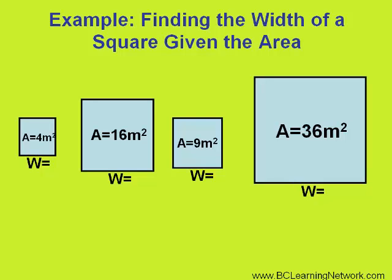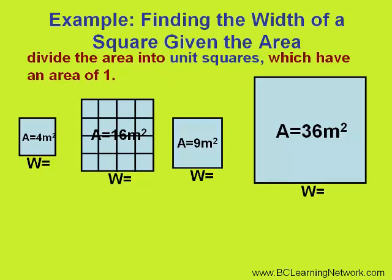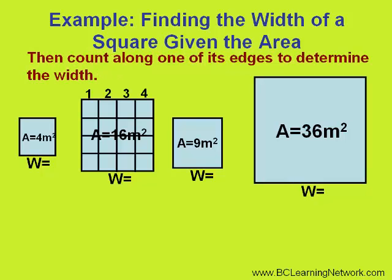In this example, you'll be given the area of the square and asked to find its width. One strategy you could use to find the width is to divide the square up into unit squares, which have an area of 1, and then count along one of its edges to determine the width.